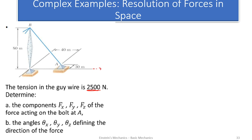We identify our axes: this is the x-axis, this is the y-axis, and this is the z-axis. When it comes to finding components, we use what we call the 'walking through approach.' We have to move from one point to the end point. This wire starts from point A to point B, so we move from A to B passing through all the necessary coordinates. We must move three times to cover all axes: x, y, and z.